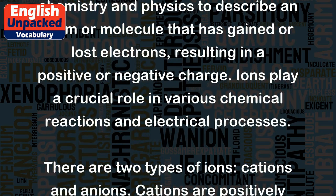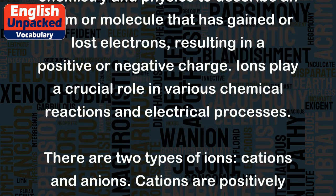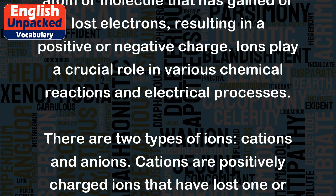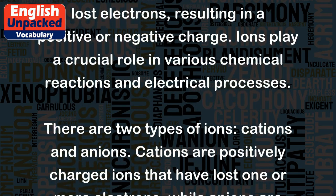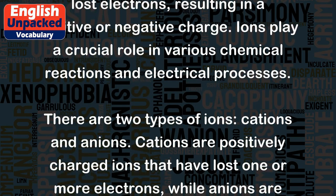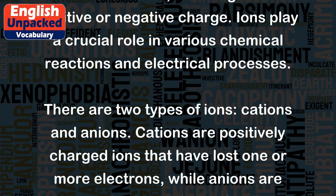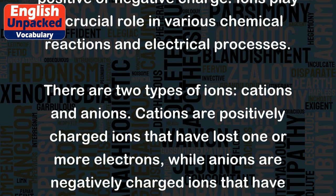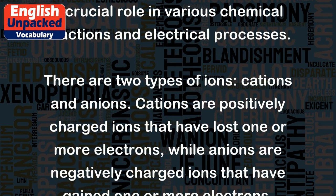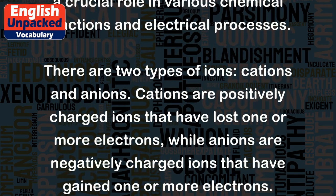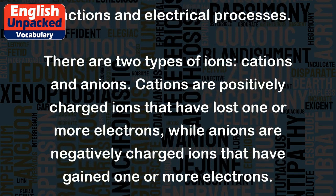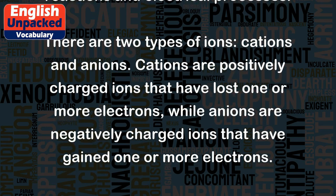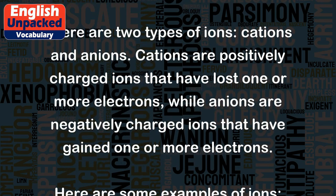There are two types of ions: cations and anions. Cations are positively charged ions that have lost one or more electrons, while anions are negatively charged ions that have gained one or more electrons.